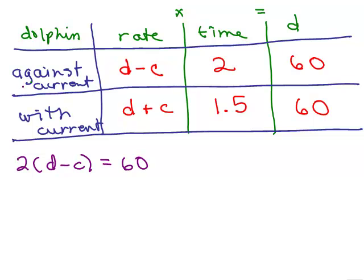So we get that from against the current, the information. With the current information, we've got 1.5 times d plus c, or d plus c times 1.5. Again, I think it's easier to write the 1.5 out in front. And we've got 60.